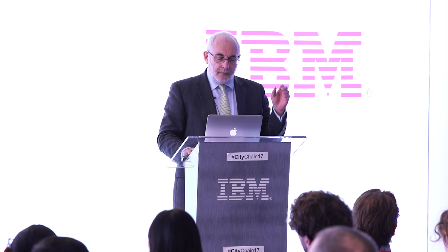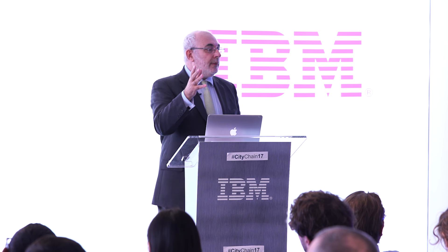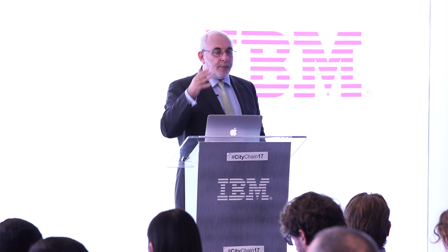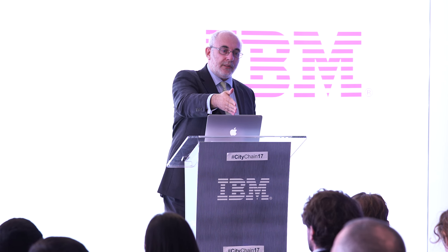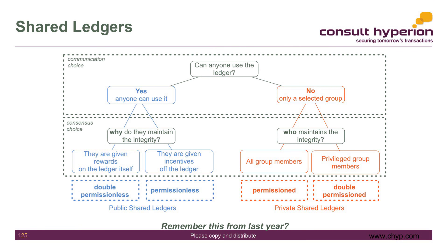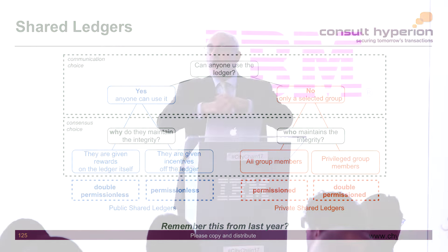So that takes us to the taxonomy. I can construct a very simple, usable taxonomy of shared ledgers just by asking questions — first at the communications layer, then at the consensus layer. At the communications layer: can everybody use it? If yes, it's a public ledger; if only some people can use it, it's a private ledger. Then at the consensus layer, for a private ledger: does everybody get to take part in the consensus-forming process? If yes, it's a permissionless ledger; if only some people get to participate, or some get more votes than others, that's a double-permissioned ledger.